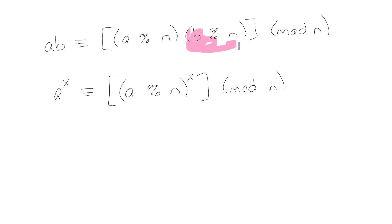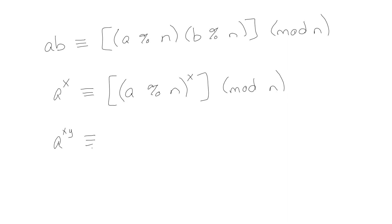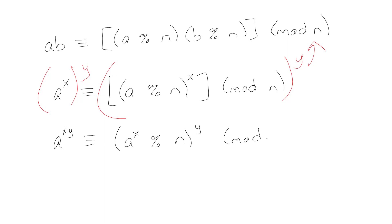So hopefully that makes sense — I could just keep multiplying by A, and I'd end up with exactly that. We can also rewrite it: instead of just calling the exponent X, we can say it's A to the XY. We can regroup how we're doing this, so basically we get A to the XY is congruent to (A^X mod N) to the Y, mod N. These are just different versions of the same thing — special cases of how we can apply it.